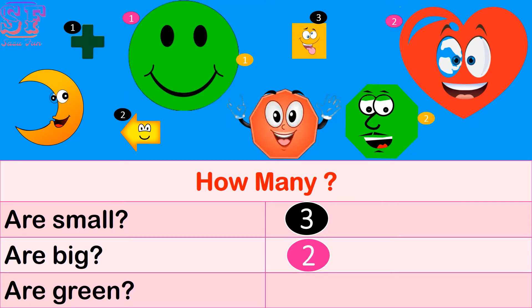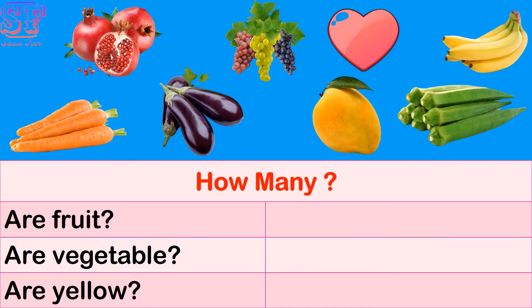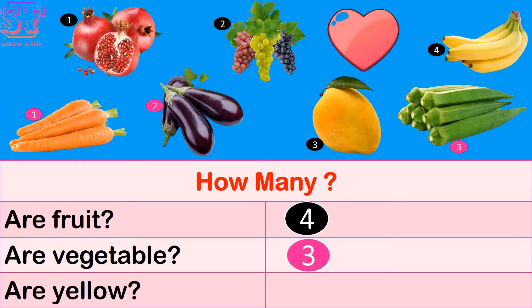How many are fruits? Can you see? One, two, three, four — four fruits. How many are vegetables? One, two, three — three vegetables. How many are yellow?